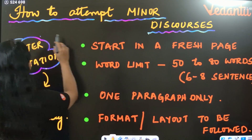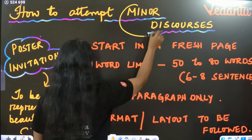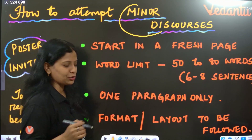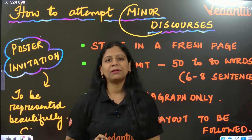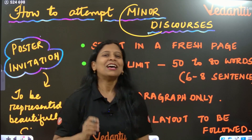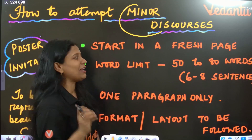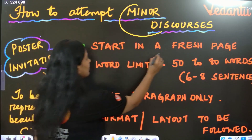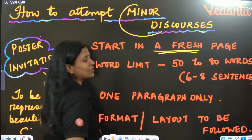So, how to attempt the minor discourses? Whenever we are writing any minor discourse, it will be for 5 marks. If you want to attempt these 5 marks questions, please remember — always start any discourse on a fresh page.